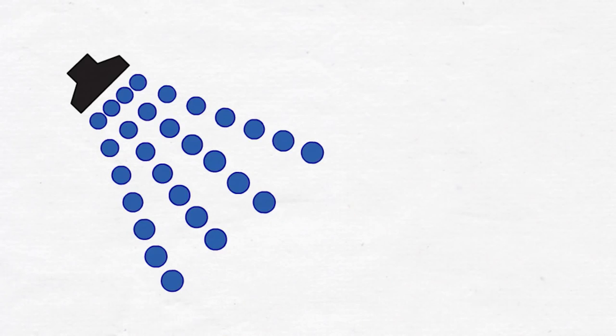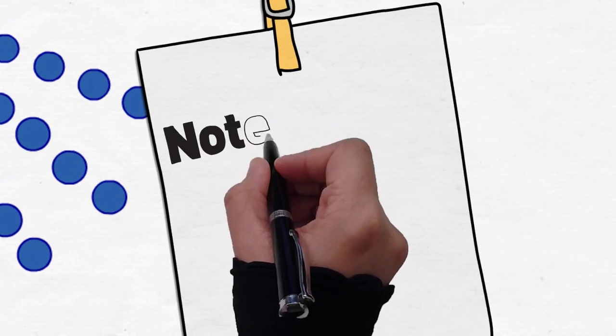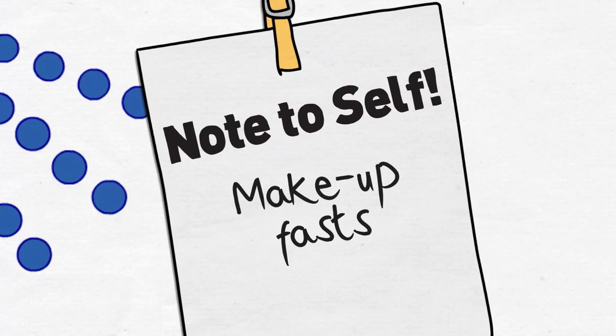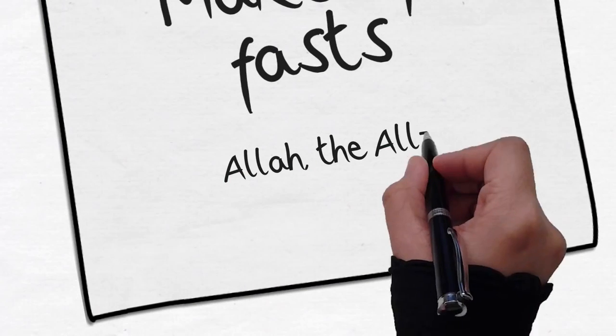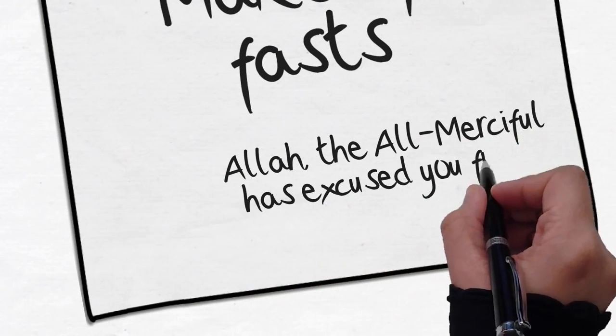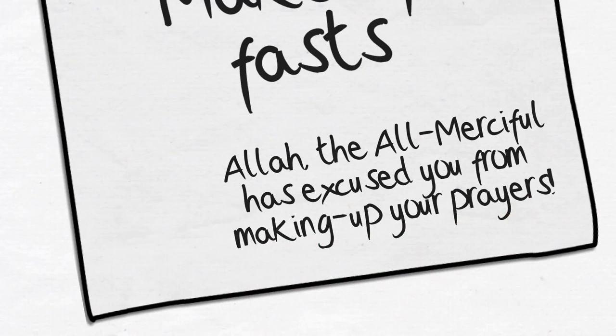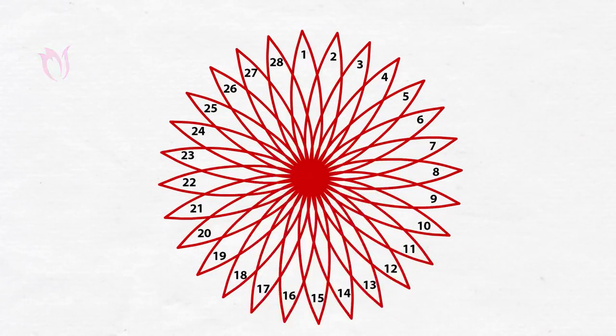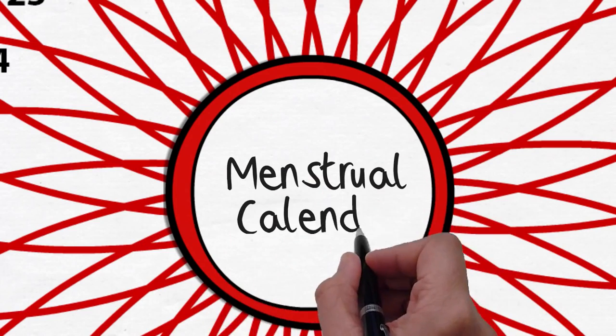Now, once the menstrual flow is over, you take a gusul, a complete bath, and your routine should come back to normal. You will have to make up for your obligatory fasts if you have missed any, but you do not make up for your prayers. And these are the rulings for those who have a regular menstrual flow, haid.